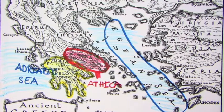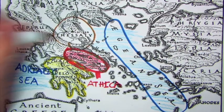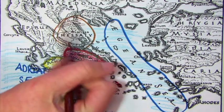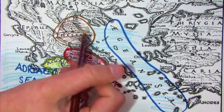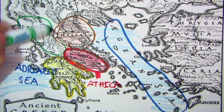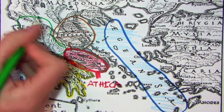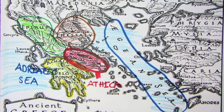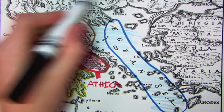And north of that is Thessaly, in brown. And northwest of that is Epirus, in green. And north of that is Macedonia, in black.